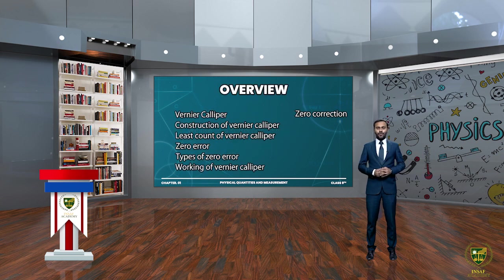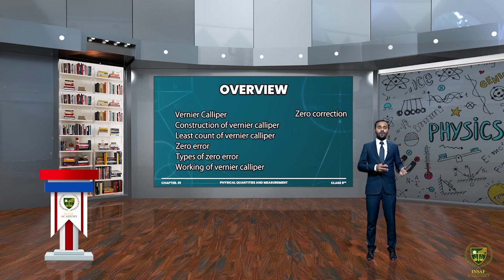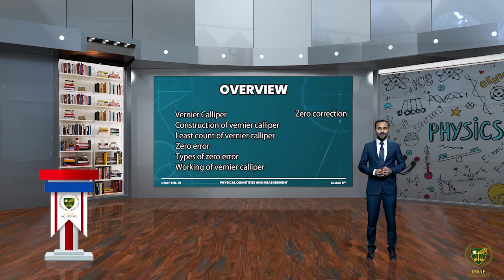Now let's have an overview of the lecture. In this lecture we studied about Vernier Caliper: its construction, the least count, zero error and its types, zero correction, and the working of the Vernier Caliper. We also solved an example to understand how we can measure readings through Vernier Caliper. I hope the lecture was well understood. Take care, Allah Hafiz.